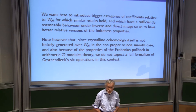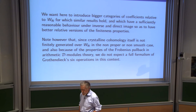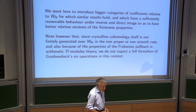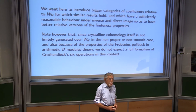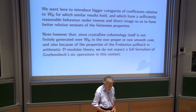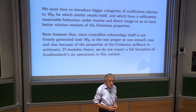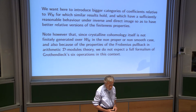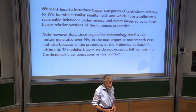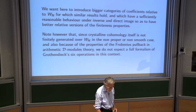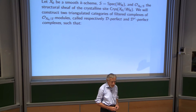I want to introduce a bigger category of coefficients relative to W_n for which I will have similar results, and in particular, whenever possible, relative versions of the finiteness properties. However, we do not expect a full formalism of Grothendieck six operations when working with torsion coefficients, because crystalline cohomology as defined does not work properly over non-smooth or non-proper schemes. So I will limit myself to the classical crystalline setup.